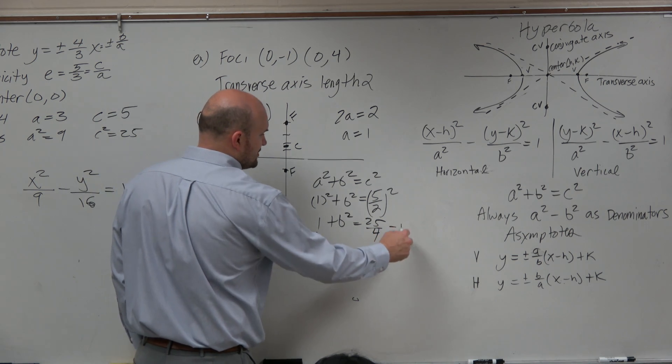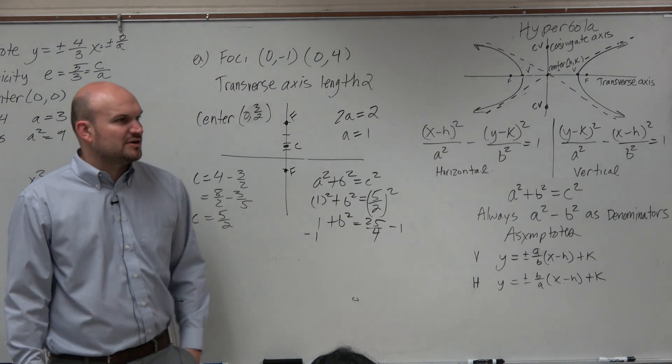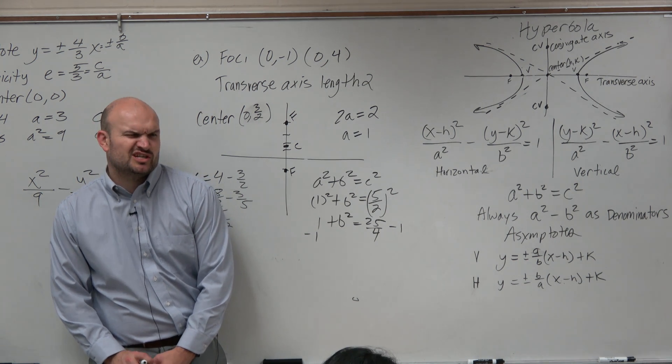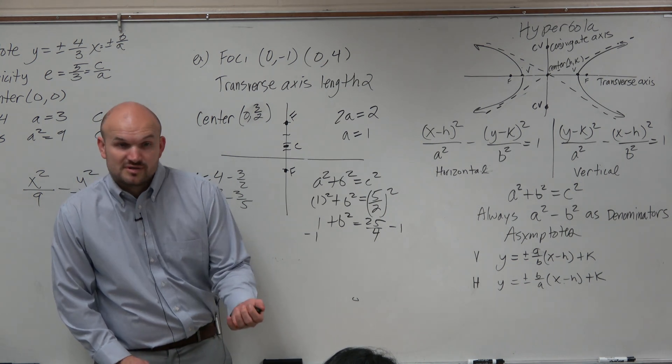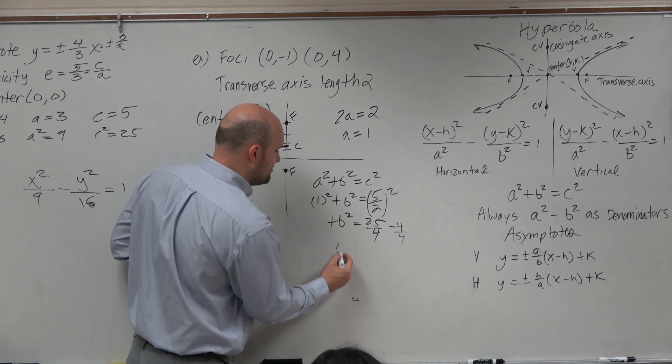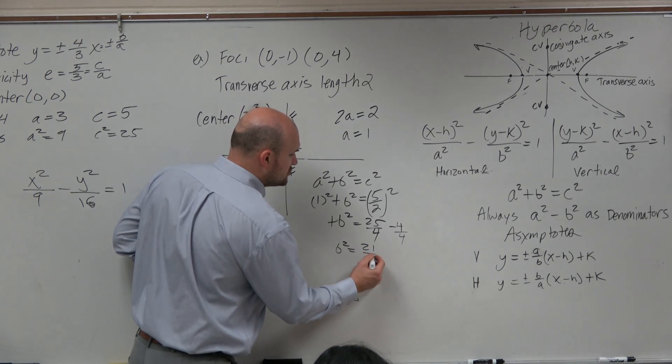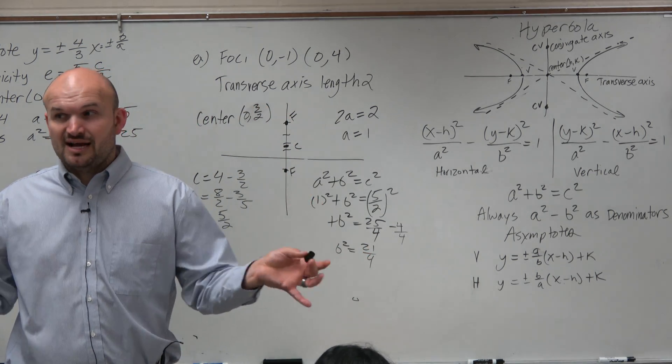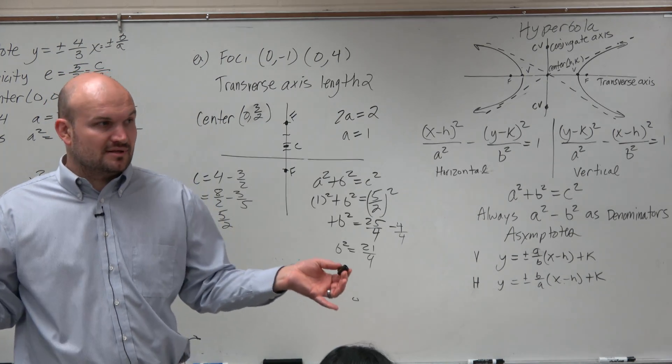Subtract 1, subtract 1. Could I rewrite 1 as a better number instead of to subtract it from 25 fourths? What would be a good number to subtract? 4 fourths, right? Just rewrite this as 4 fourths. So therefore, I can see that b squared is equal to 21 fourths. Still not a very nice number, but at least we got something, right?